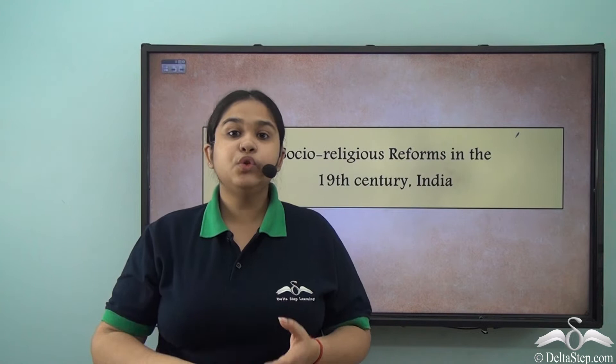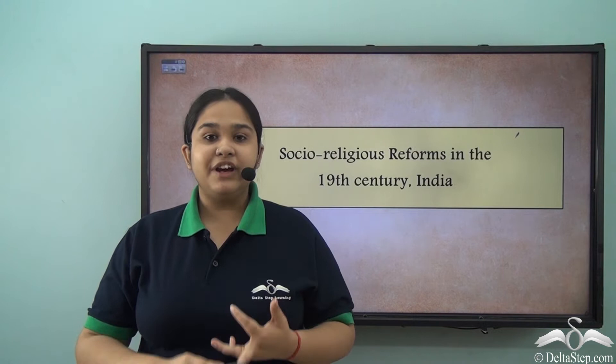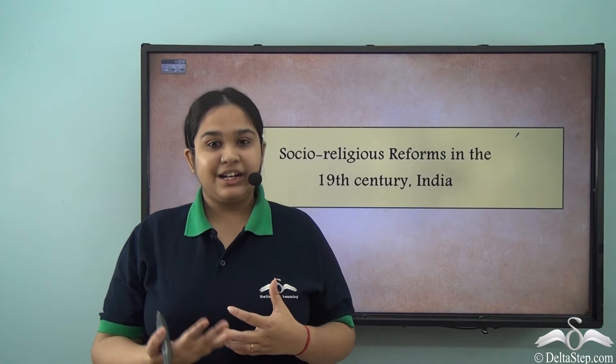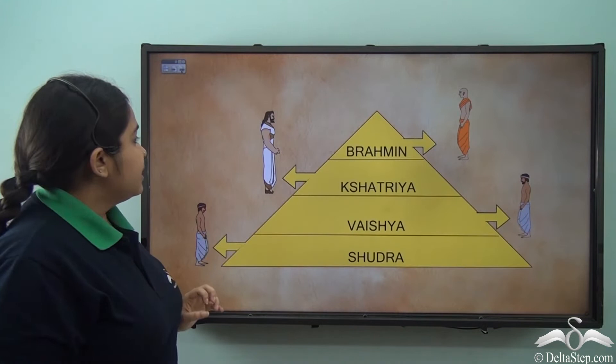The Indian society was divided into four castes on a Varna basis. First was the Brahmanas, then the Kshatriyas, then the Vaishyas and the Shudras. These people did not live in harmony, and certain evil social practices started to be observed and grew in 19th century India.